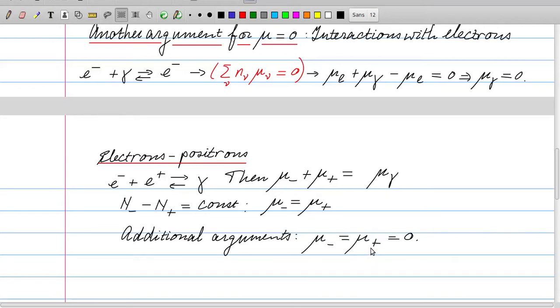That doesn't tell us that mu_gamma is zero. We need additional arguments for that. They come usually from quantum field theory. But if you would accept those additional arguments, then that is another reason for seeing that mu_gamma is indeed zero.